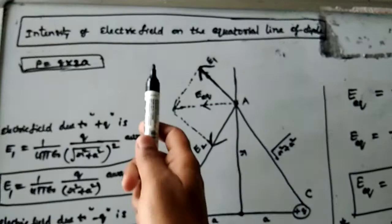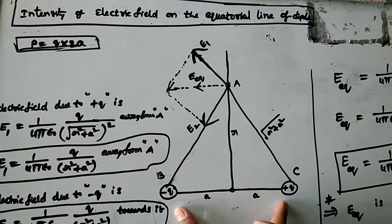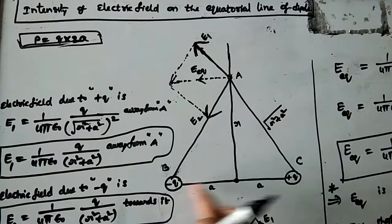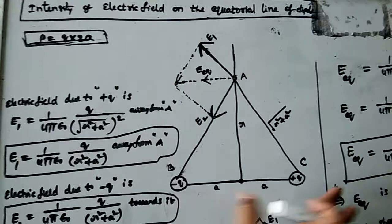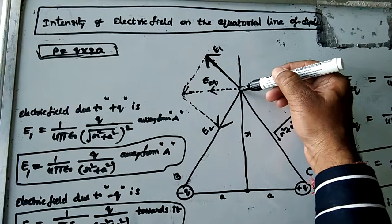Now we look at the intensity of electric field on the equatorial line of a dipole. Previously we covered the axial line; now it is the equatorial line. Consider an electric dipole of dipole moment p equal to q into 2a. The horizontal line passing through the two charges is called the axial line. The perpendicular bisector to the axial line is called the equatorial line.